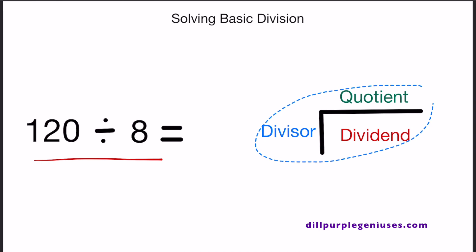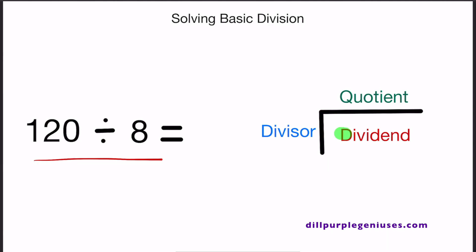Over here on the right, we have a basic division formula. Under the division sign, we have a number that's called the dividend. The dividend is a number that's being divided. On the left, 120 is the number that's being divided. On the outside, we have a number that's called the divisor. The divisor is a number that is dividing the dividend. On the left, this would be 8.